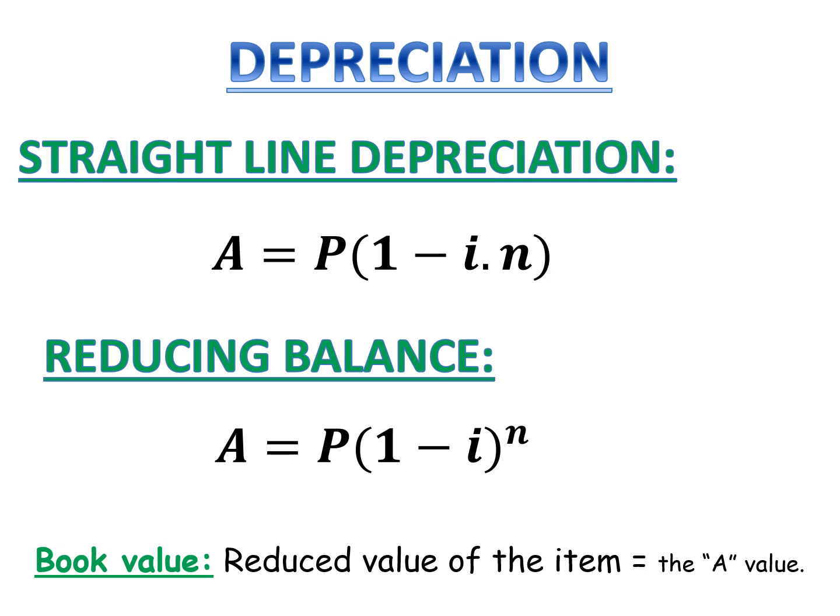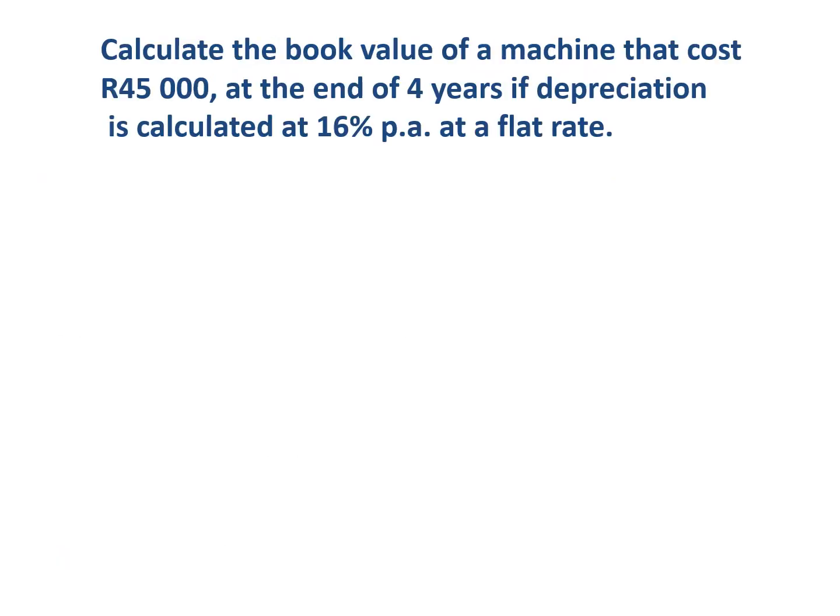Let's just do a few examples of each. In the first example, we're going to calculate the book value of a machine that costs 45,000 Rand at the end of four years, if depreciation is calculated at 16% per annum at a flat rate. So at a flat rate is straight line, so it's your simple interest version of the formula.